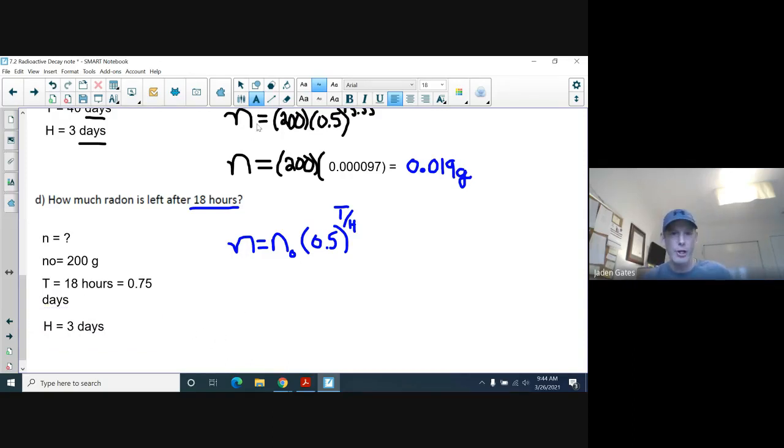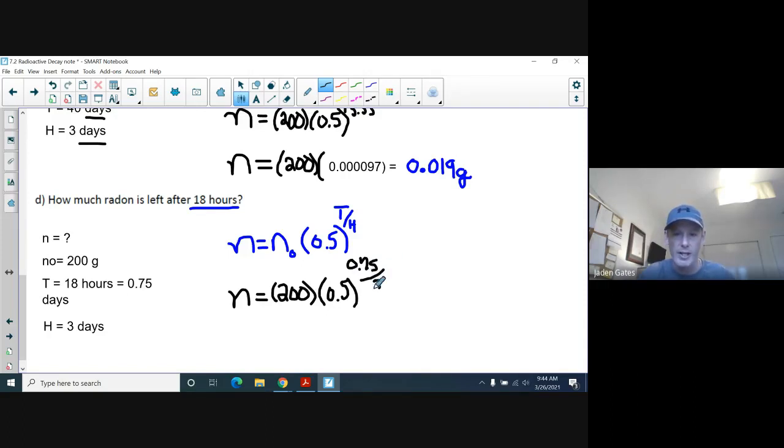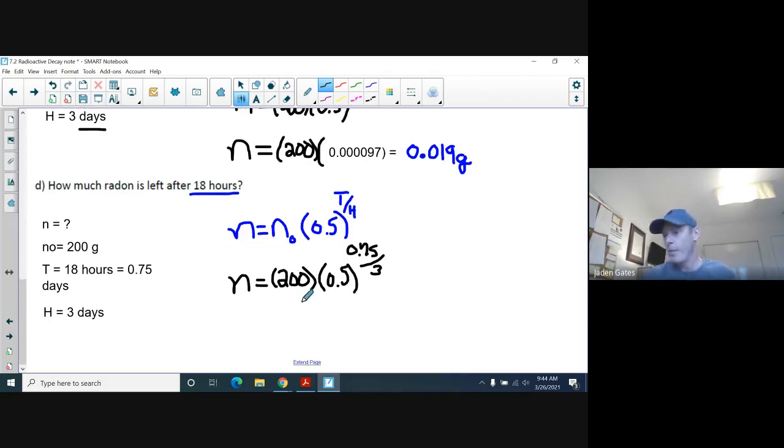So, now, again, I'm going to substitute into my formula. So, I have my N is equal to, again, my N-naught is still 200 grams. So, then we have 0.5 to the power of T over H. So, my T, again, make sure I get them right, is 0.75. And my H is three. Again, this is all an exponent that I've got to figure out. So, again, just following BEDMAS. So, we got 200 here. That's going to be the last thing we're going to worry about. I'm going to figure out what my exponent is here. So, I get 0.75 divided by three, 0.25.